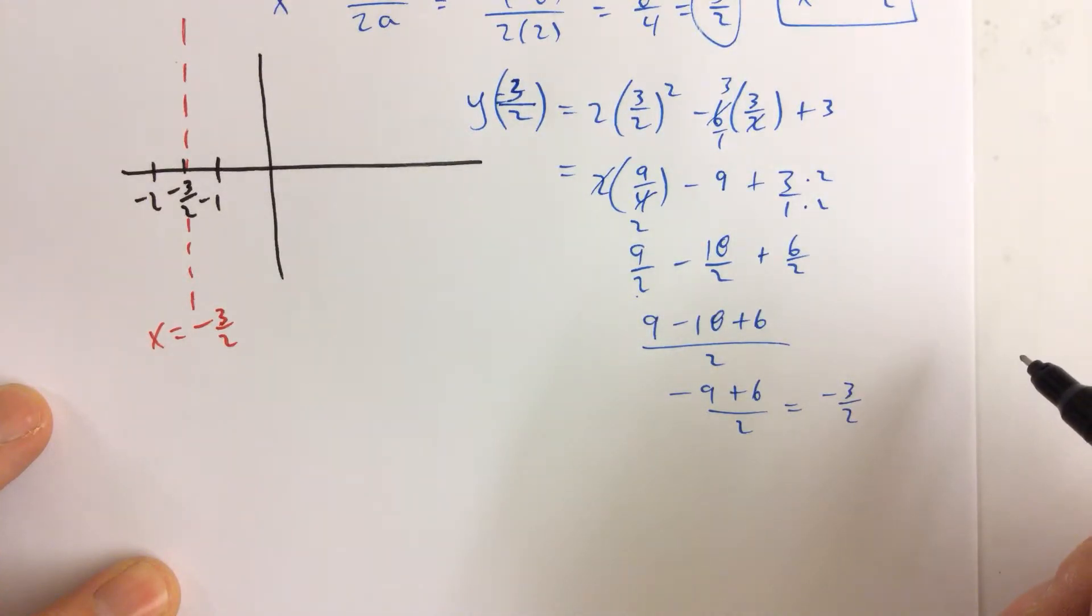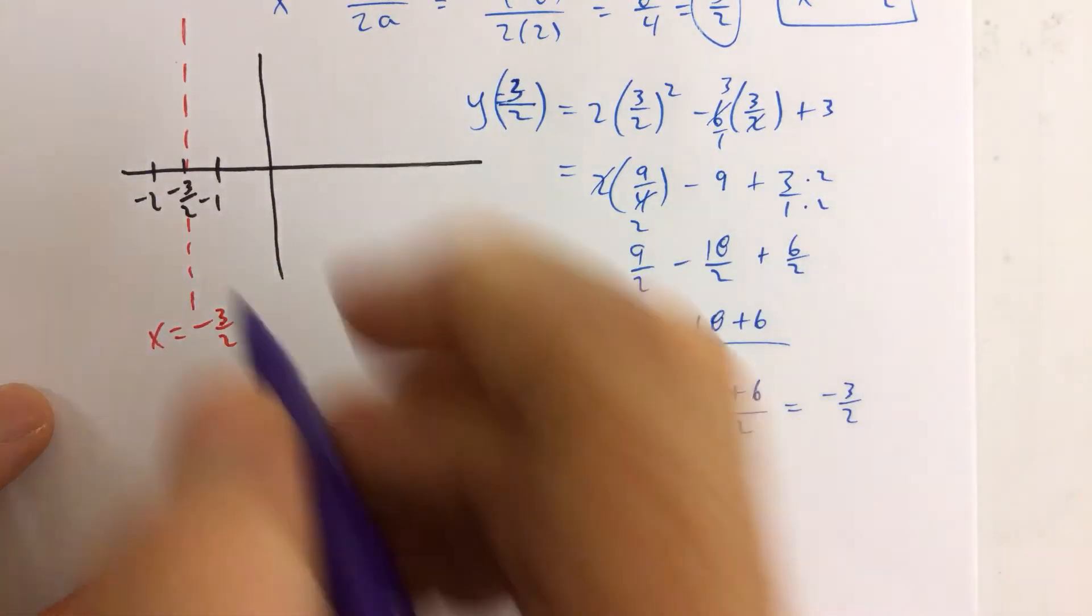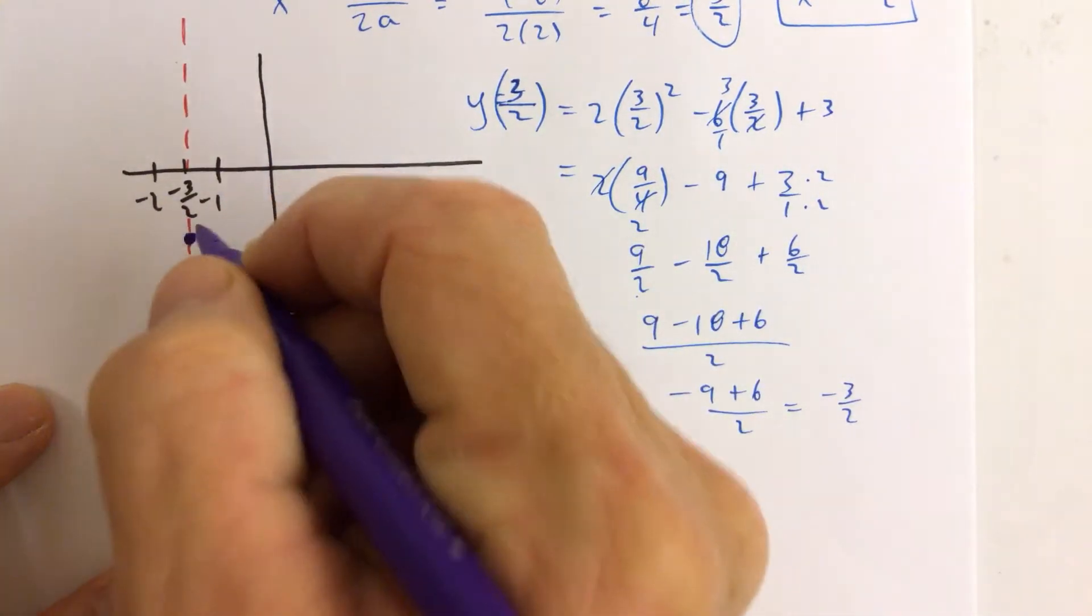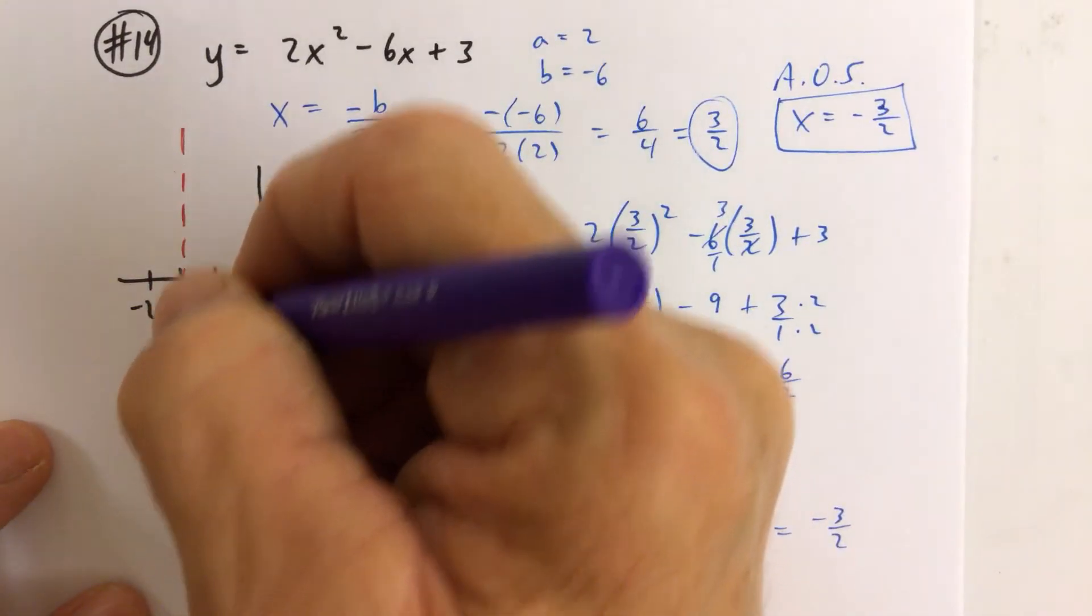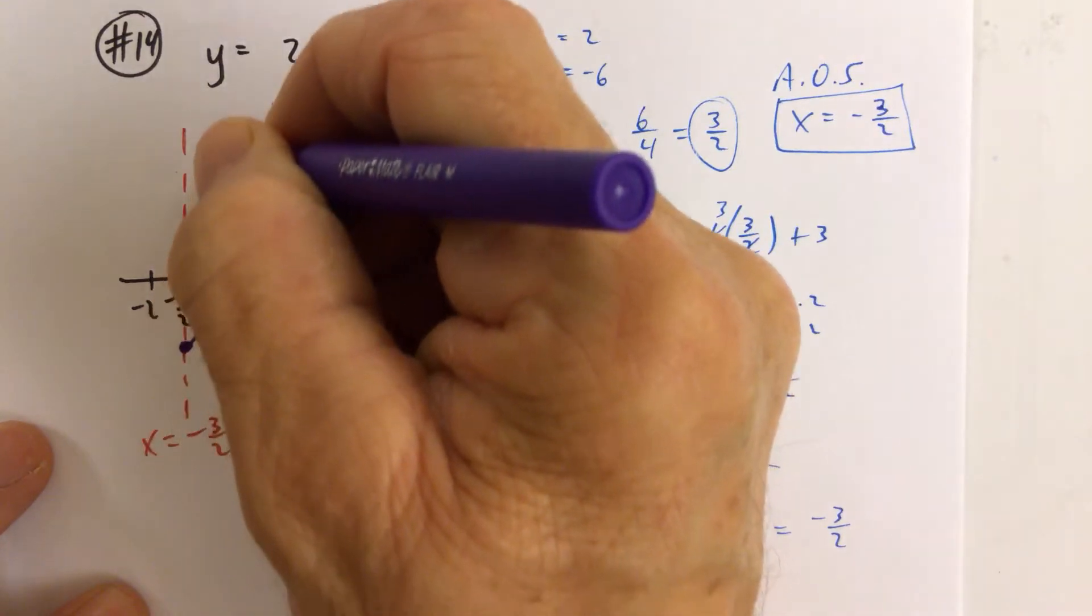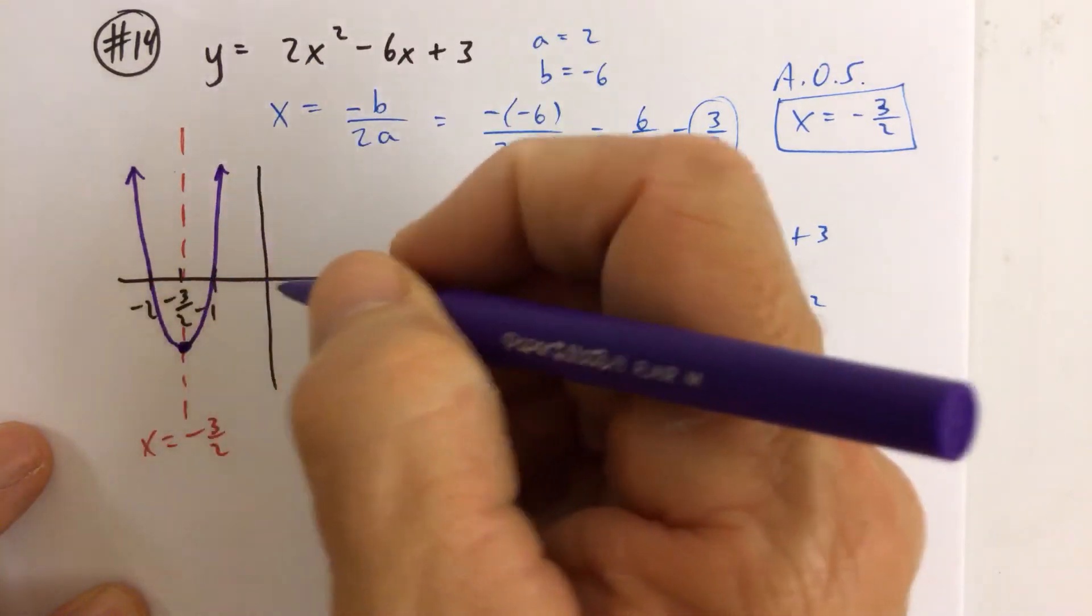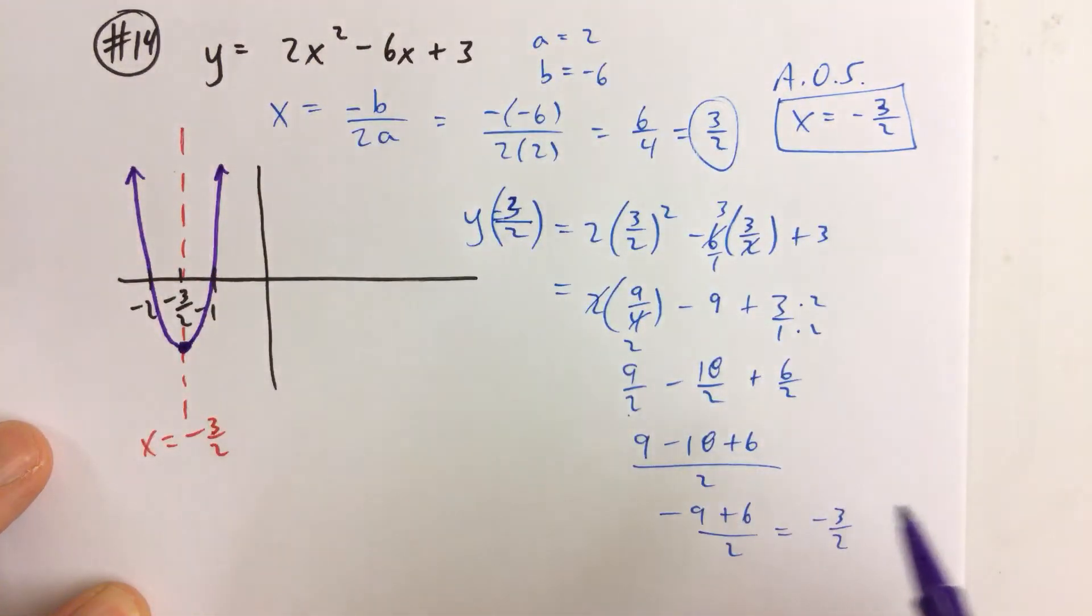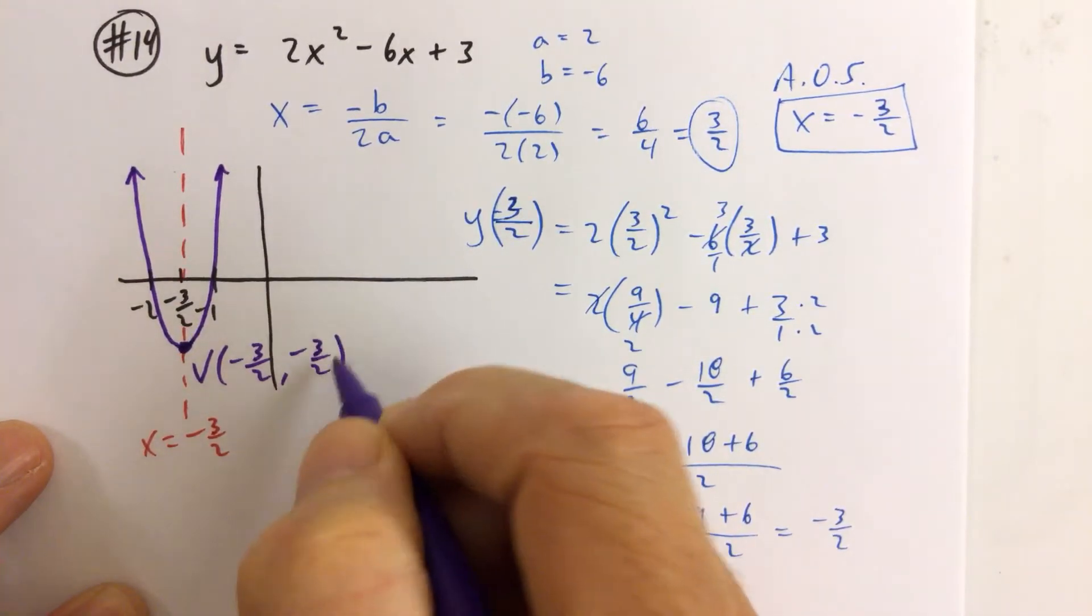So the vertex is at negative 3 halves, negative 3 halves. And so we're just going to go ahead and plot negative 3 halves right down there. The parabola opens up because the a is 2. And so we open it up, and it's going to be a little bit more narrow than normal. I'm not saying that the x-intercepts are negative 2 and negative 1. I'm just drawing it and not worrying about the x-intercepts for right now. But we do need to worry about, well, first of all, let's go ahead and write down, label the vertex. Negative 3 halves, negative 3 halves.